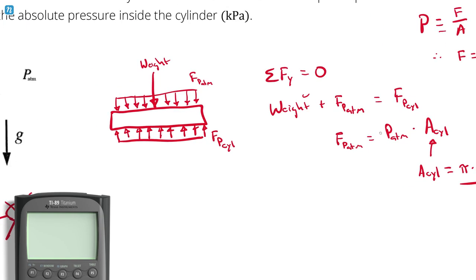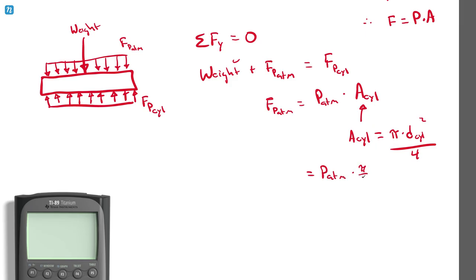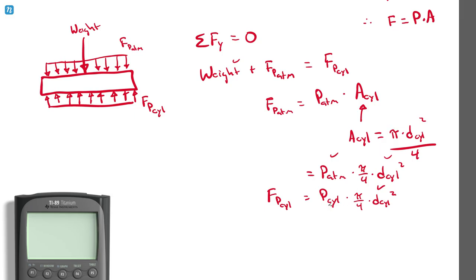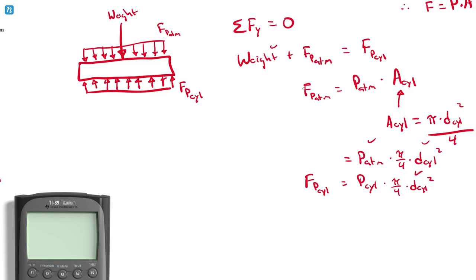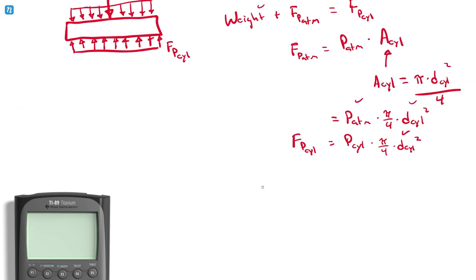I can calculate the area of the circle as pi times the diameter squared divided by four, since area equals pi r squared and diameter equals two times r. So the atmospheric pressure force is atmospheric pressure times pi over four times the diameter squared. Similarly, the force from the pressure inside the cylinder is that pressure times pi over four times the diameter squared — the same area. I know the diameter but not the pressure inside; that's what I'm solving for.